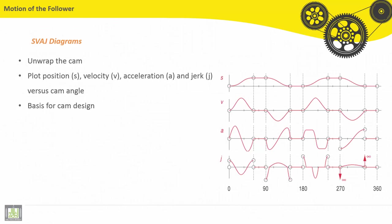Let's see the motion analysis of the follower. The most important thing in cam design is SVAJ diagrams: S means position, V means velocity, A means acceleration, and J means jerk.